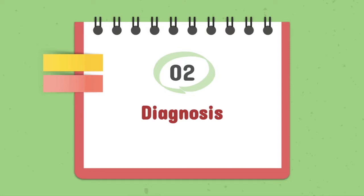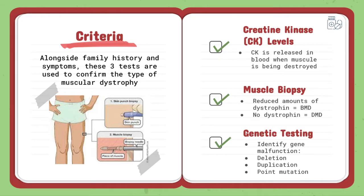In the next part of this video, we will be going over diagnosis. Alongside family history and current signs and symptoms, the three tests shown on this slide are used to determine if someone has muscular dystrophy and, if so, which type. Creatine kinase or CK levels are used to measure the degree of muscle degradation, because CK is released into the blood when muscle is being destroyed. Muscle biopsies are relatively non-specific toward muscular dystrophies, but reduced amounts of dystrophin typically indicate BMD, and a lack of dystrophin indicates DMD.